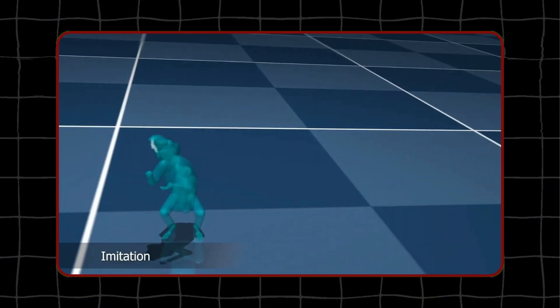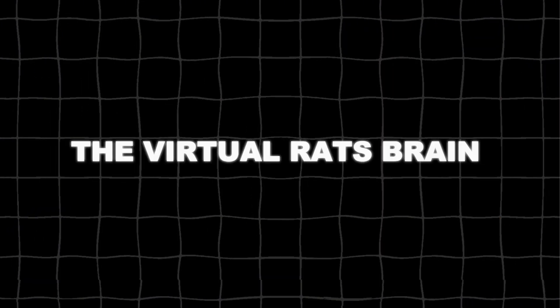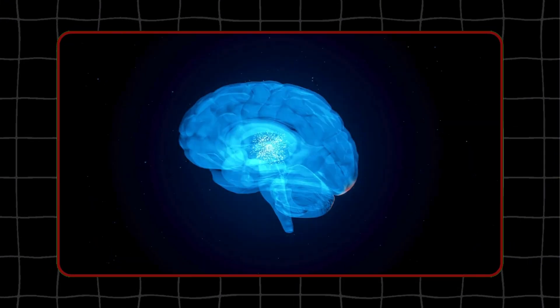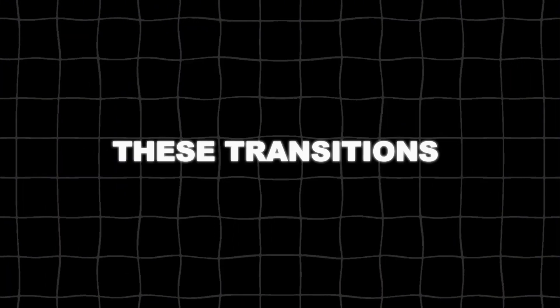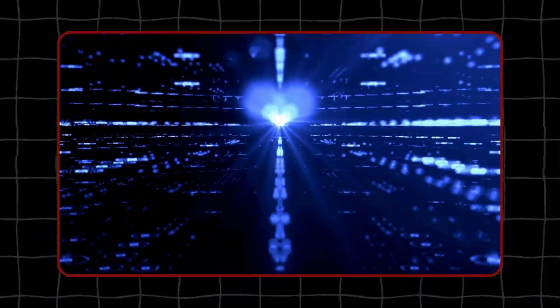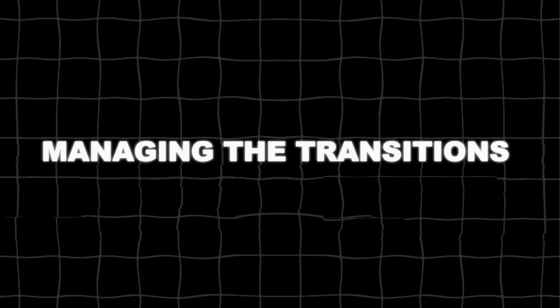This ability to switch between different modes is essential for how natural brains work. It helps animals quickly adapt to changing situations and perform various tasks well. The virtual rat's brain showed this flexibility, meaning the deep learning algorithm learned some key principles of how real brains control movement. These transitions in the virtual brain came from the learning process. The neural network understood different situations and behaviors on its own, managing the transitions smoothly.